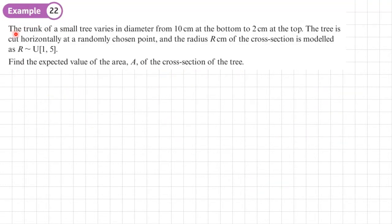Example 22. The trunk of a small tree varies in diameter from 10 centimeters at the bottom to 2 centimeters at the top. The tree is cut horizontally at a randomly chosen point, and the radius R of the cross section is modeled as R in a uniform distribution with the parameters 1 and 5. These are like the two ends of the probability. Find the expected value of the area A of the cross section of the tree.